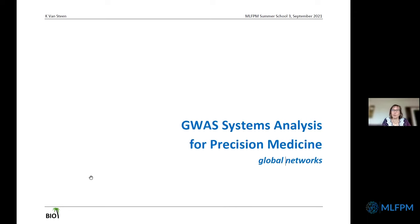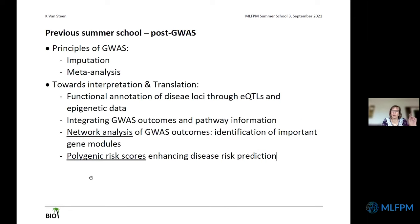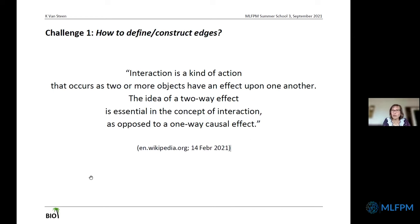Last summer school, you saw what GWAS are, how they are analyzed, and post-GWAS where GWAS outcomes were integrated with pathway information, and network analysis of GWAS outcomes was presented along with discussions about polygenic risk scores. I'm going to take it from that point, moving to interactions with GWAS data as a first example before moving to microbiome and transcriptome data. How to define the edges, how to construct them? Terminology is quite challenging in this context.